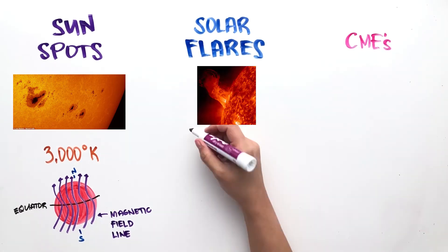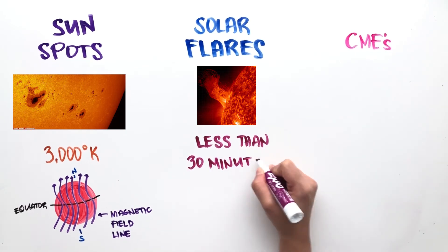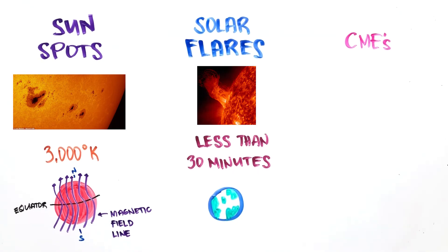Solar flares are explosions that occur when built-up magnetic energy in the solar system is suddenly released. It takes less than 30 minutes to reach the Earth and major flares can trigger coronal mass ejections, or CMEs.